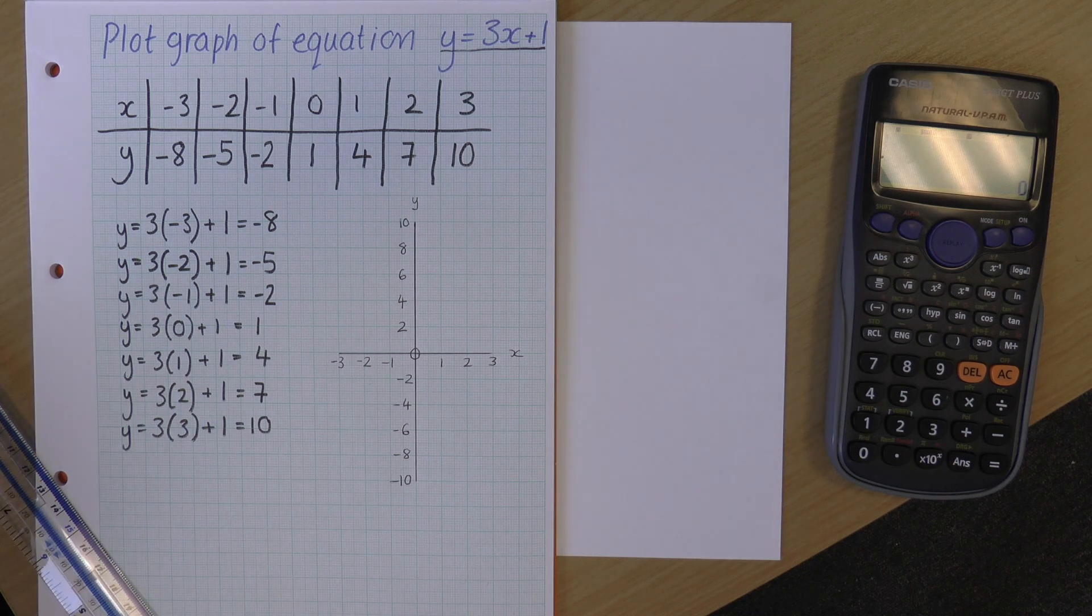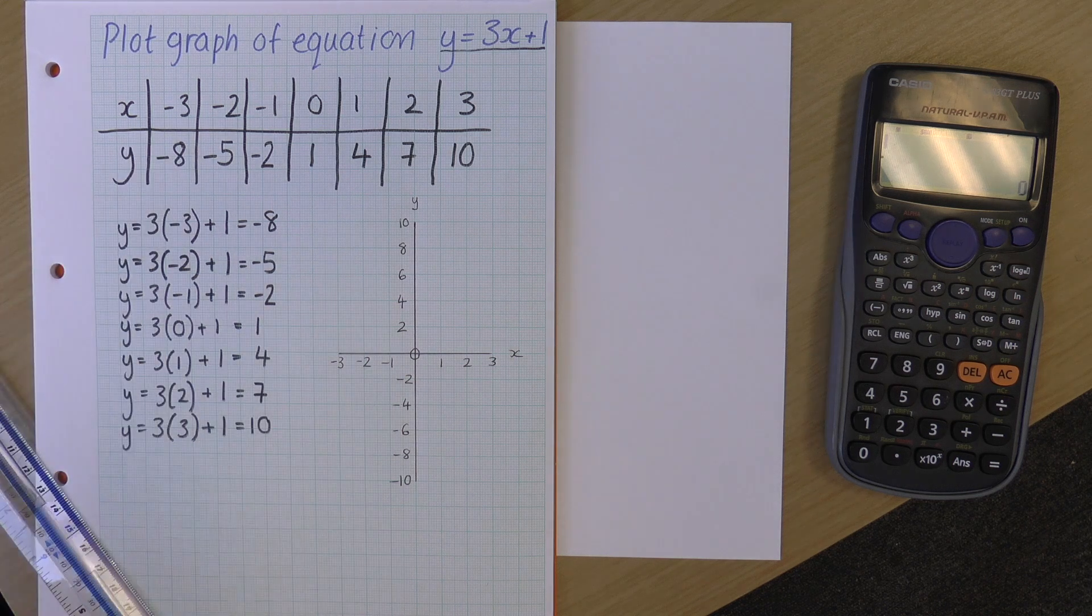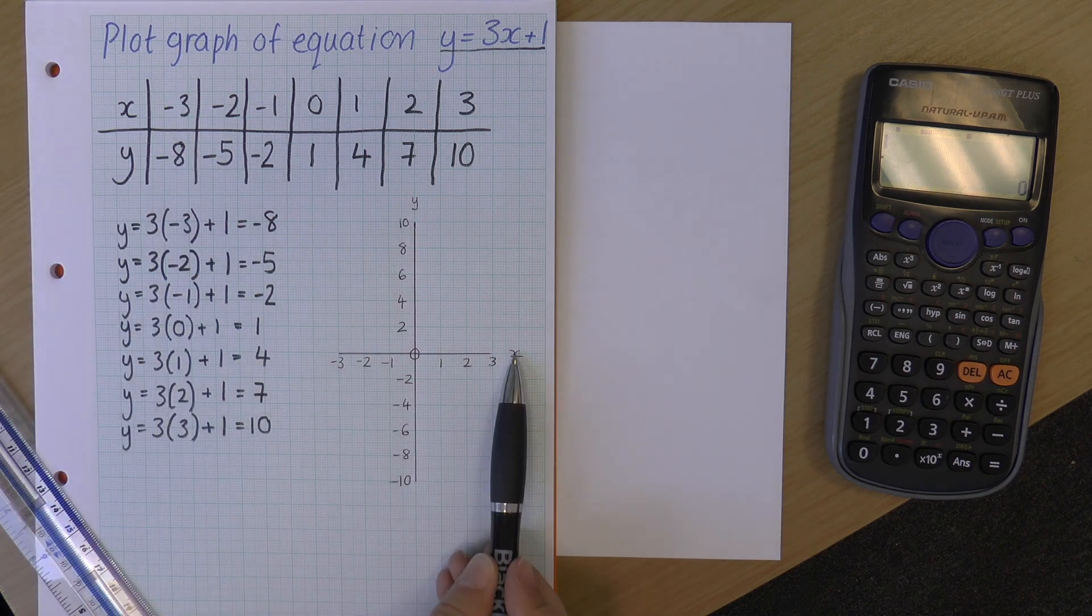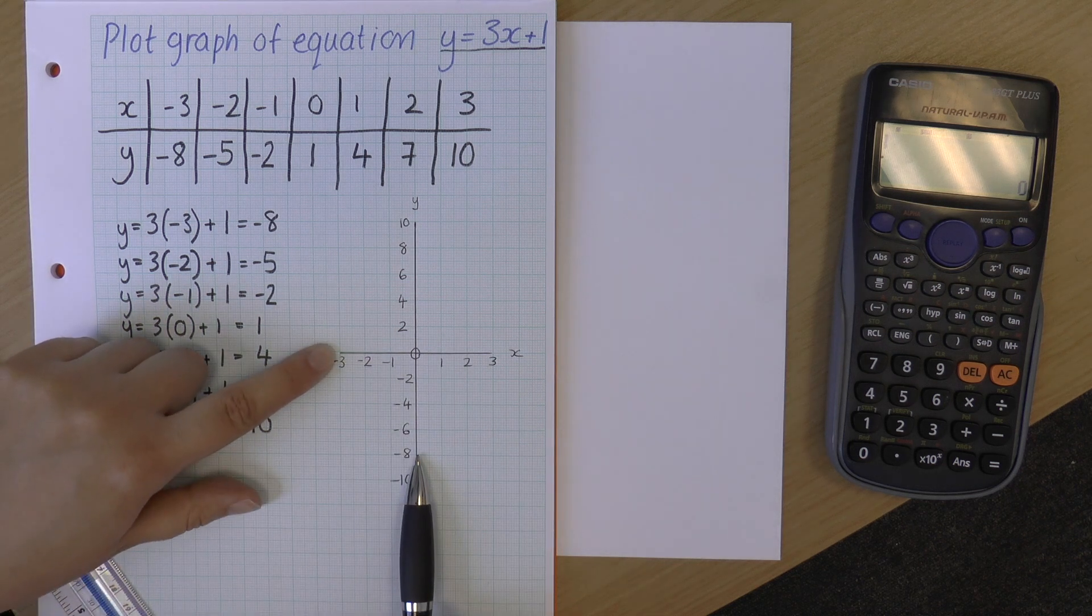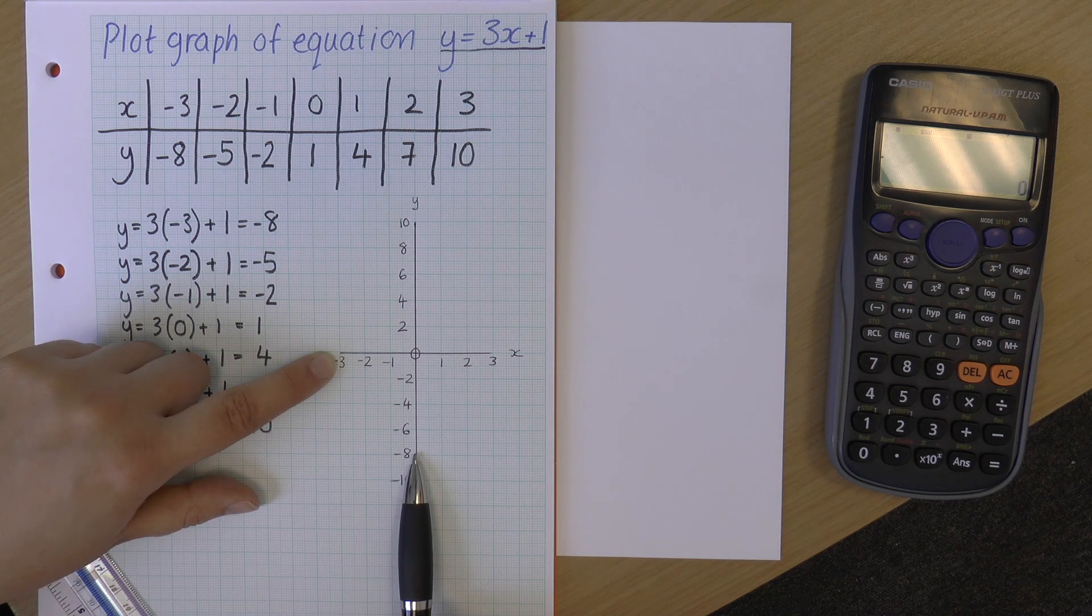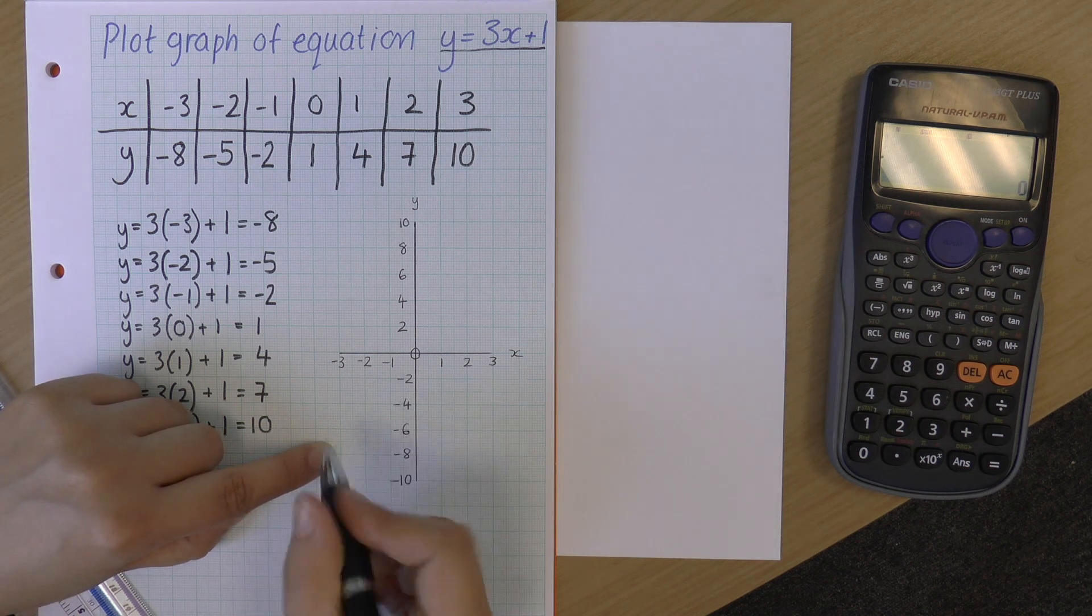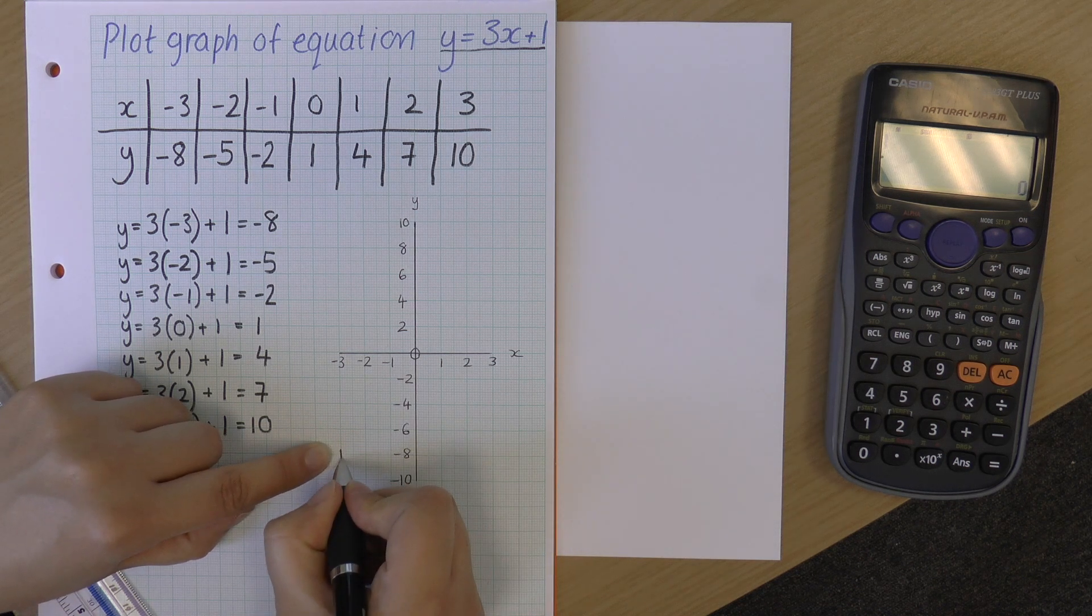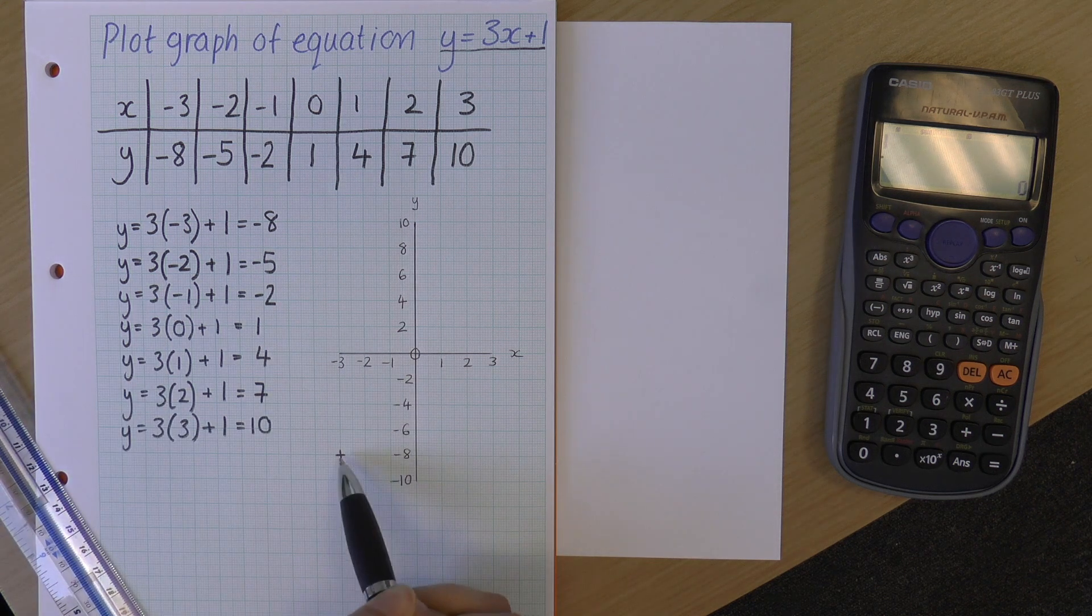And now I just start plotting my points. So my first point is that x equals minus 3, y equals minus 8. So I find minus 3 on the x axis and minus 8 on the y axis, and I look at where those join together. So x axis down, y axis across. So I've got one point there. x equals minus 3, y equals minus 8.